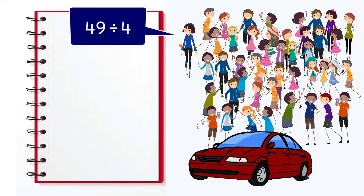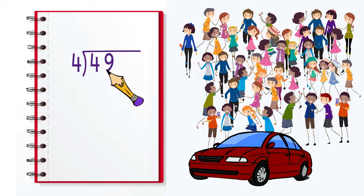To solve the problem using long division, we would draw a division house, put the number we are dividing by on the outside and the number we are dividing into on the inside. Then we need to find how many times four goes into the first digit. Four goes into four one time, so we would place the one over the four.